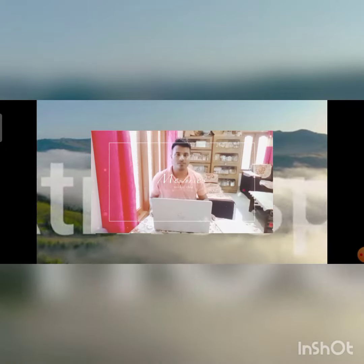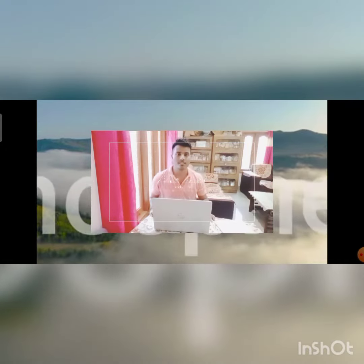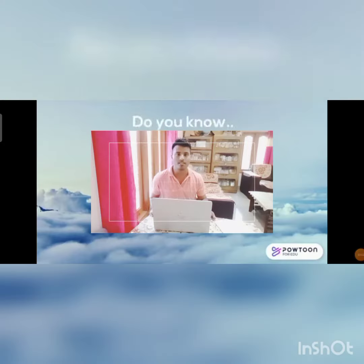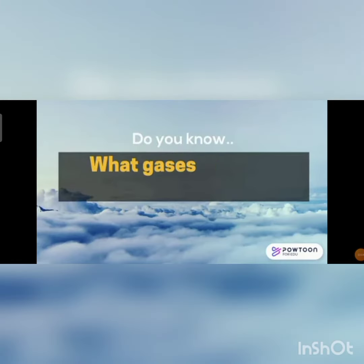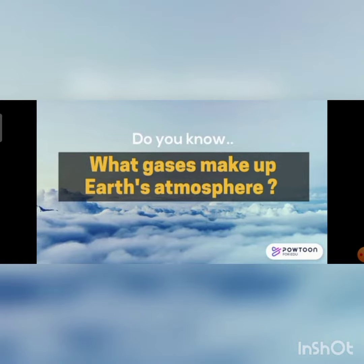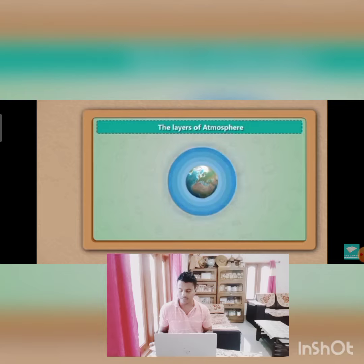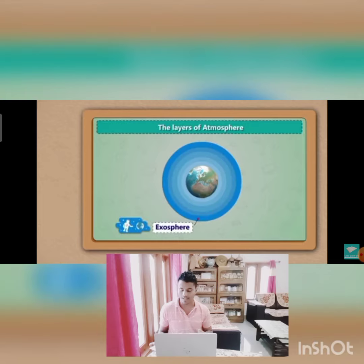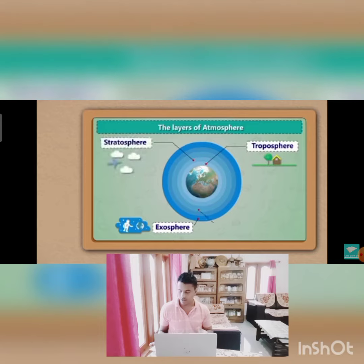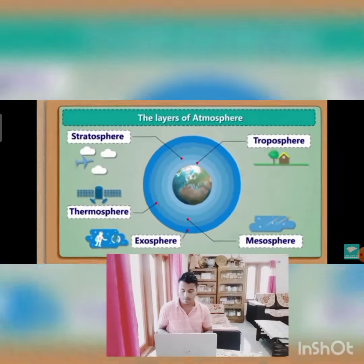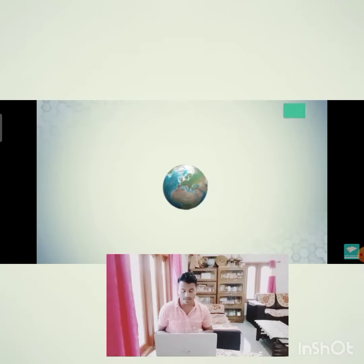Hi everyone, my subject is Karsama. I am going to discuss about atmospheric structure. The atmosphere can be divided into five horizontal layers, mainly on the basis of temperature. These layers are troposphere, stratosphere, mesosphere, thermosphere, and exosphere.